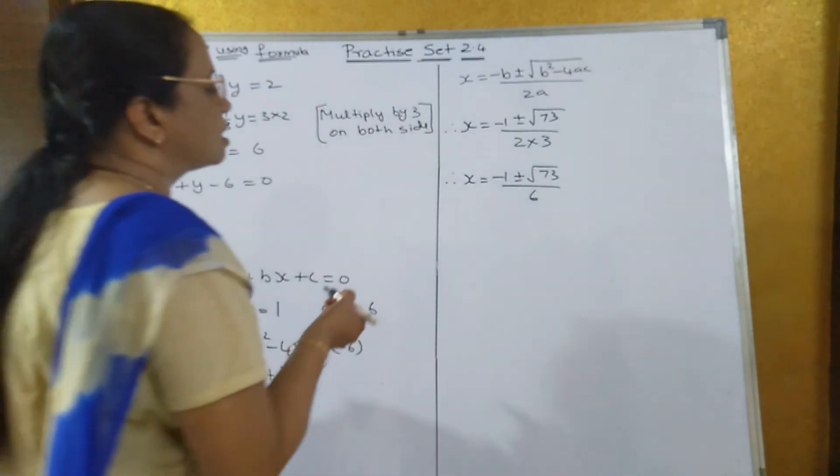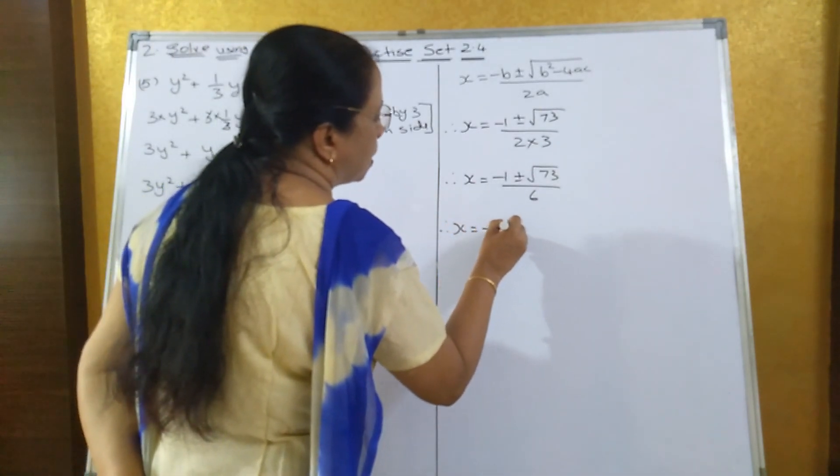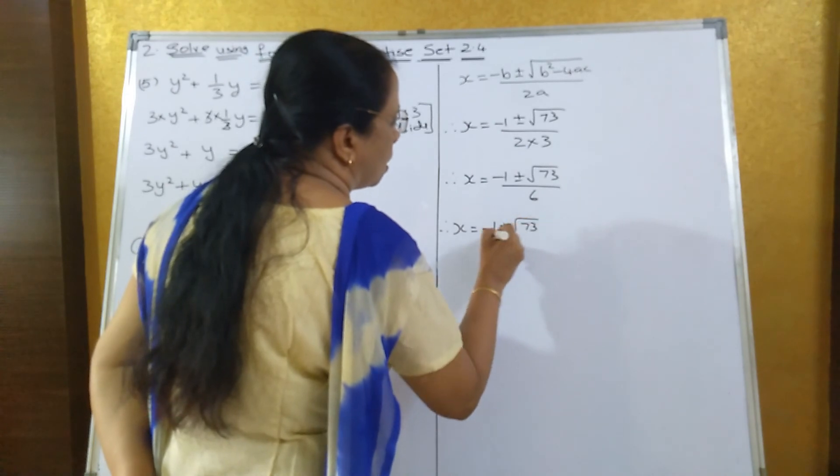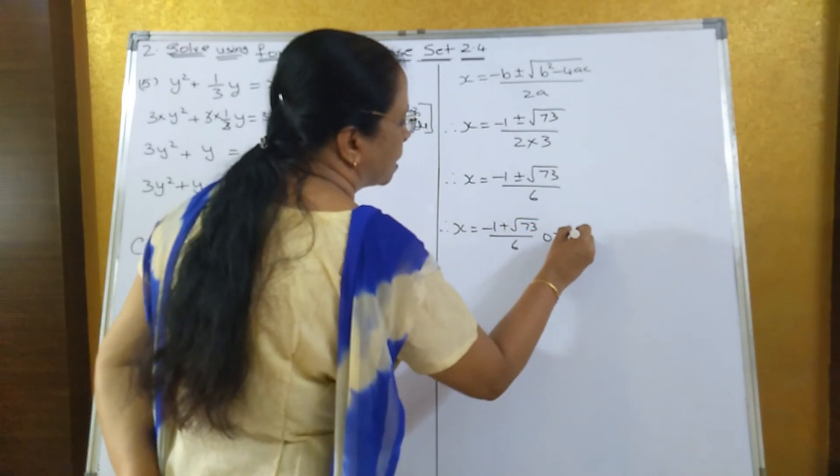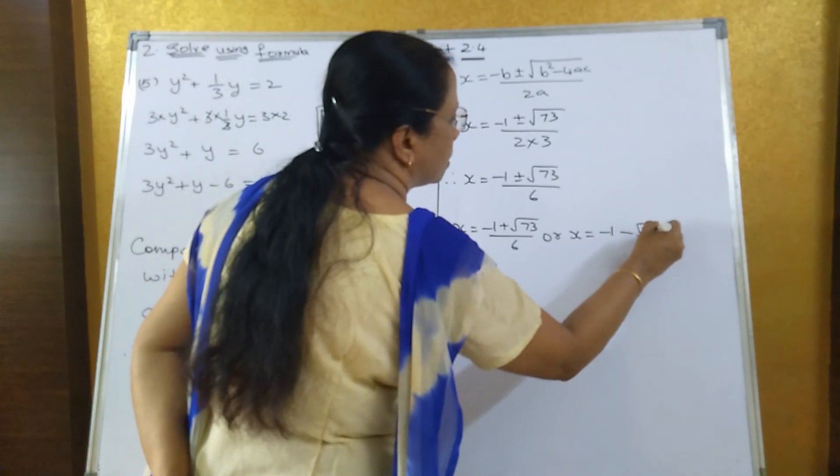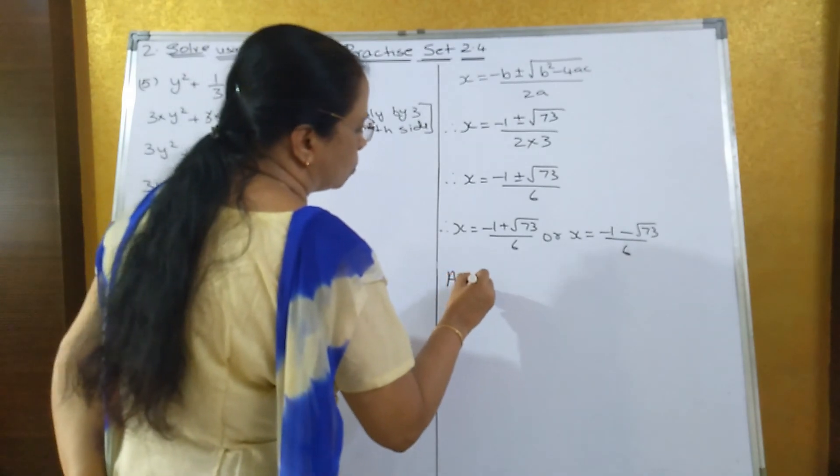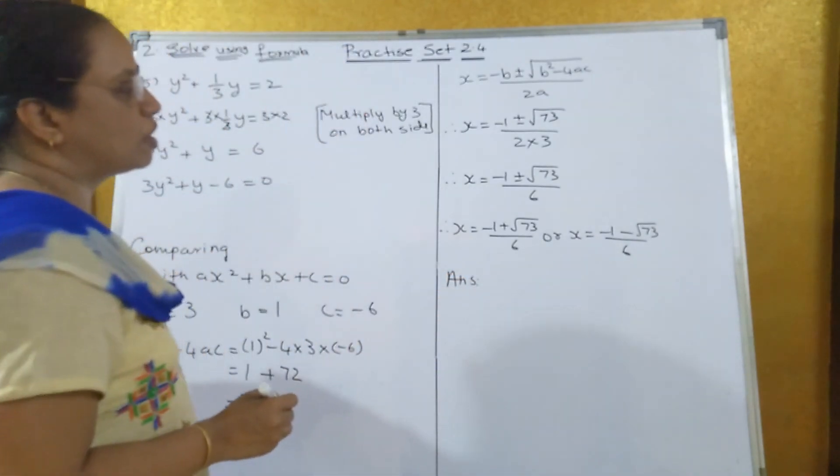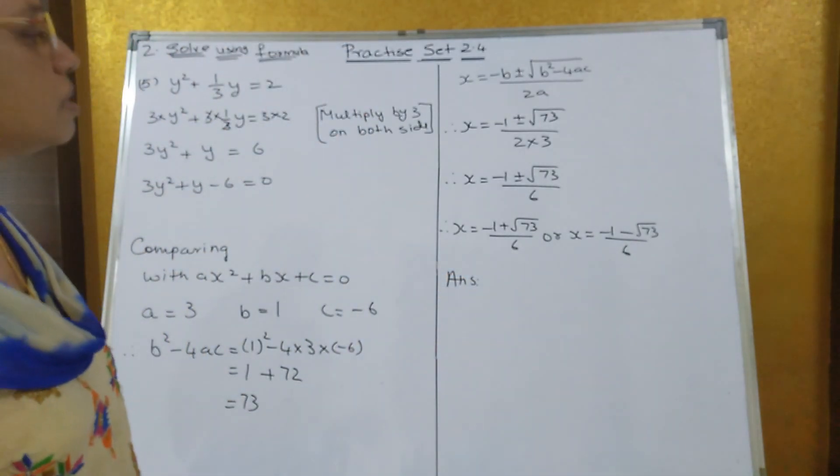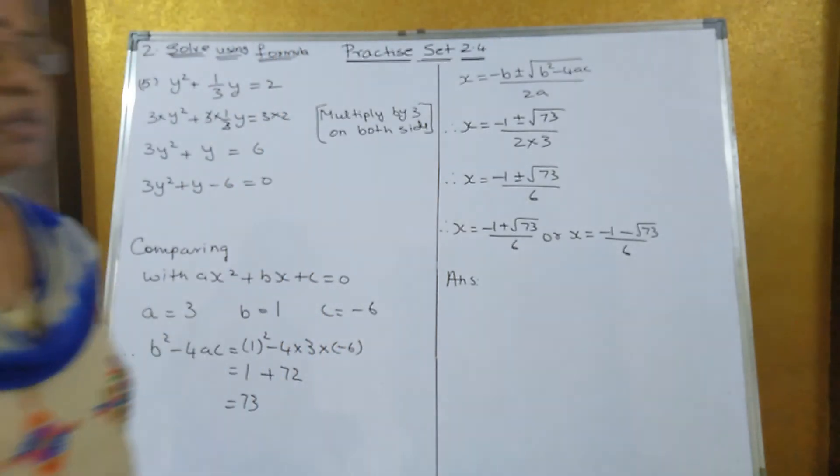Nothing is common over here, so the answer will remain that only. Therefore, x = (-1 + √73)/6 or x = (-1 - √73)/6. The roots of the given quadratic equation are (-1 + √73)/6 and (-1 - √73)/6.